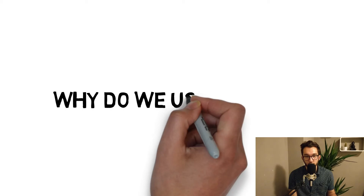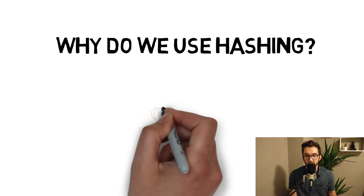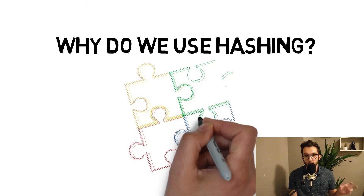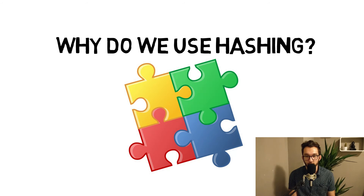Why do we use hashing? We use it to keep the blockchain safe — that's the main thing. One change in a hash changes all data afterwards, so fraud by changing data inside a block will be detected immediately by all the miners or nodes checking it. It also makes proof of work possible, as miners have to find nonces so the result fits the correct hash.